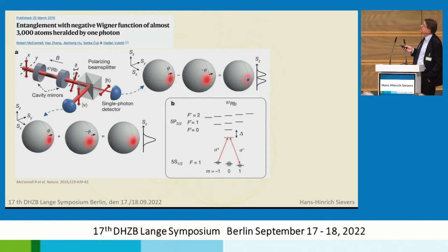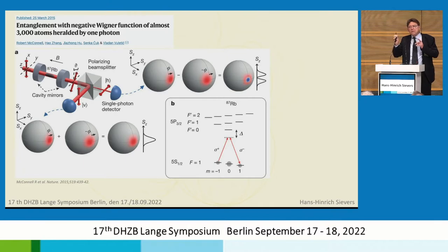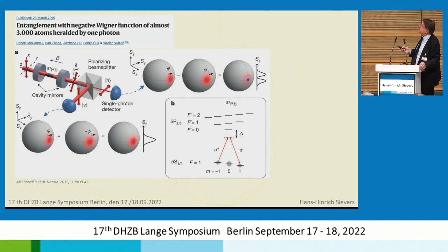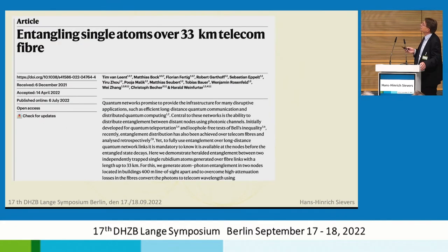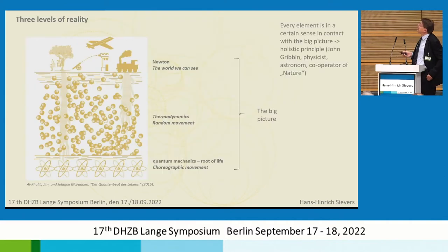The entanglement was recently shown to be not only with two particles — it was shown that 3,000 atoms can receive information instantaneously from one little photon. And it was recently shown that we, in our retina, have the possibility to recognize one single photon — it is hardly imaginable — and one photon can indeed inform 3,000 atoms instantaneously. Very recently it was shown that this can occur at a distance of 33 kilometers, and theoretically it is possible at a distance from one end of the Milky Way to the other, instantaneously.